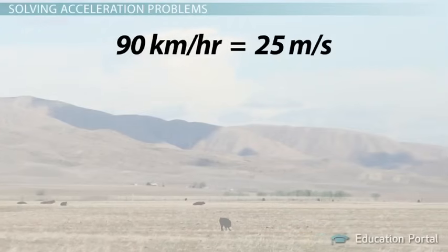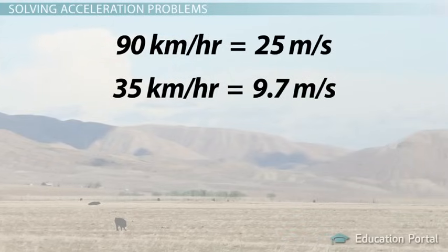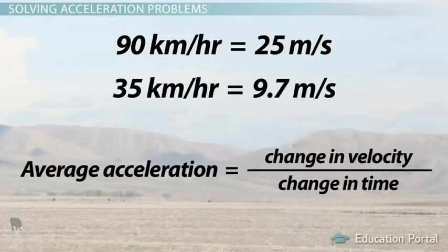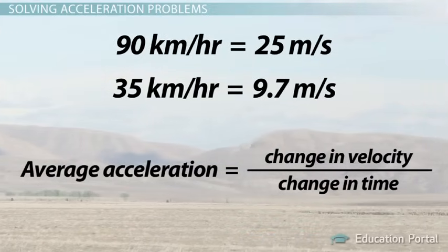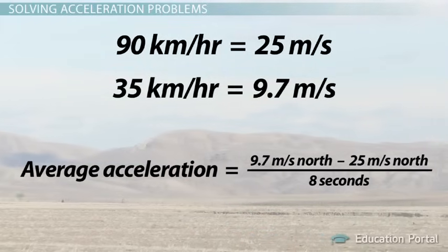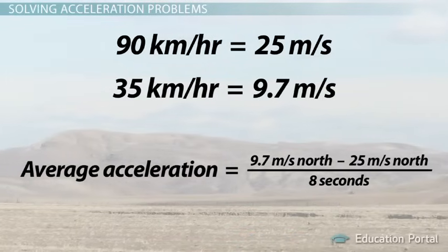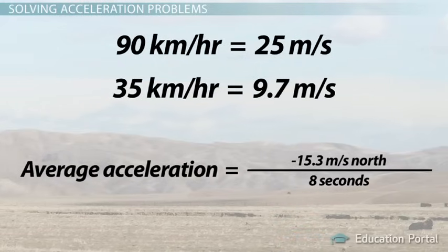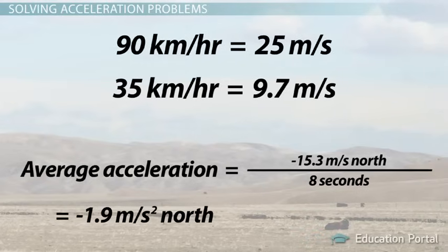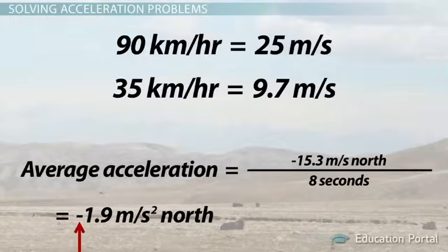90 kilometers per hour equals 25 meters per second. 35 kilometers per hour equals 9.7 meters per second. Average acceleration is the change in velocity divided by the change in time. Average acceleration equals 9.7 meters per second north minus 25 meters per second north divided by 8 seconds. Negative 15.3 meters per second north divided by 8 seconds equals negative 1.9 meters per second squared north. In this case, the car is slowing down so the acceleration is negative.